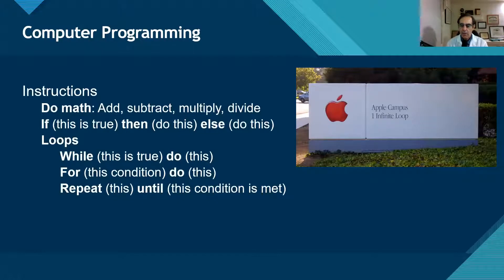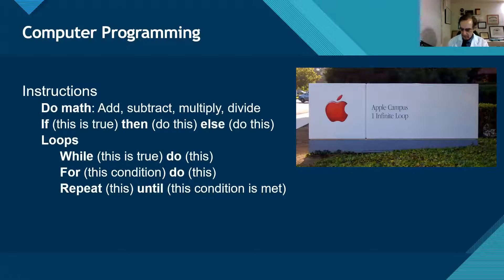Here I have a picture of the original Apple headquarters, and the address is One Infinite Loop. When we talk about an infinite loop, it's a loop where the condition is never met, so the computer spins forever and never stops. That's a bad thing in programming — you never want to get into an infinite loop. A little Apple humor there.